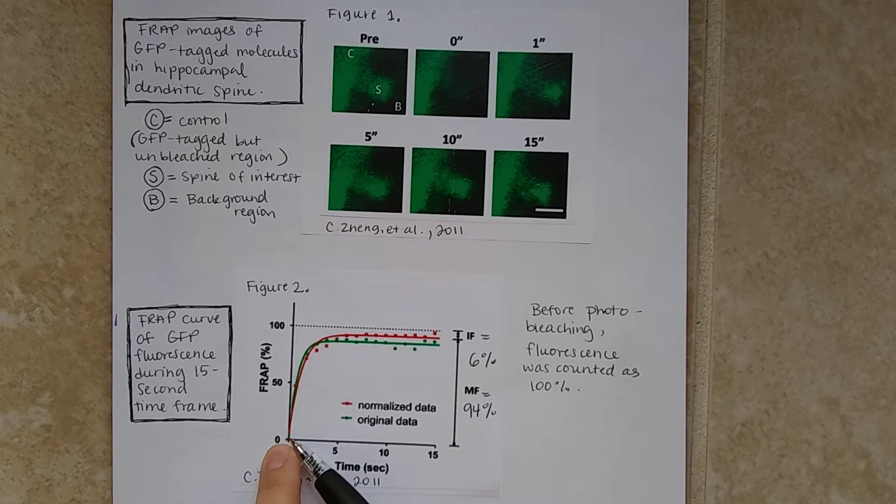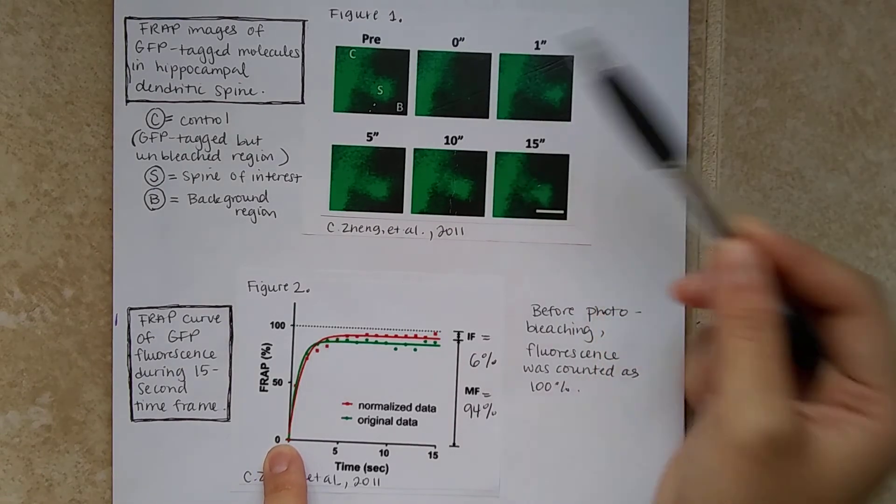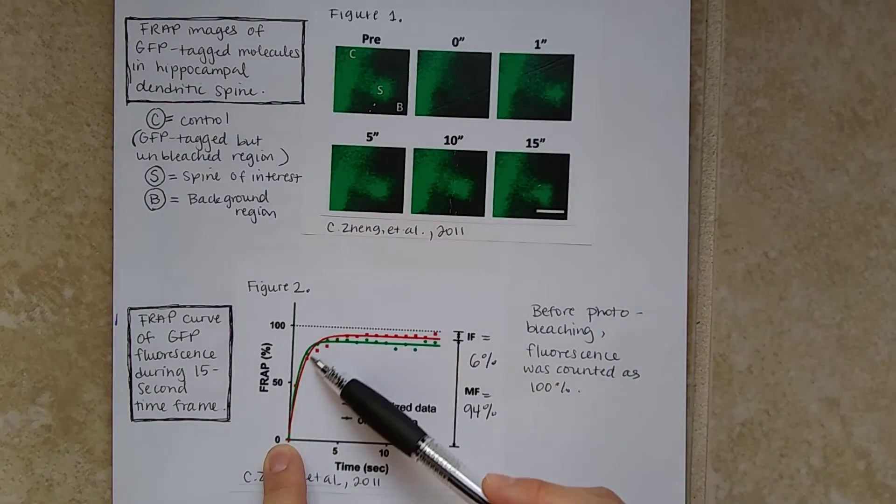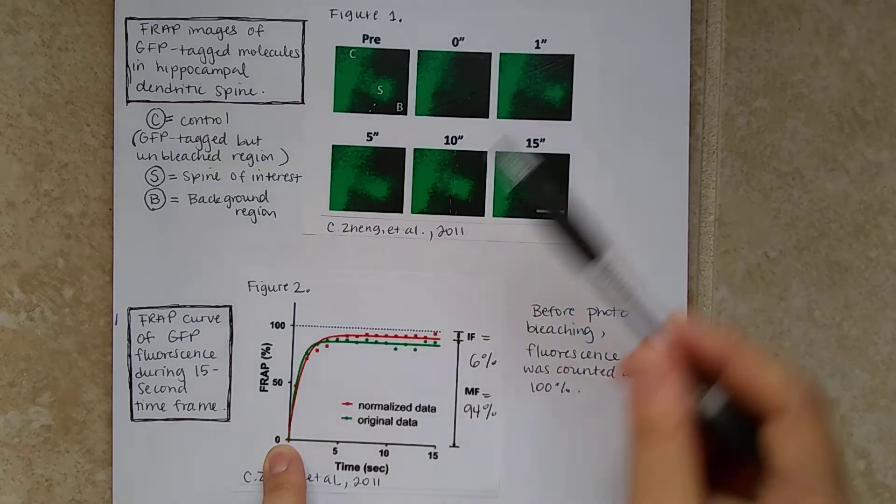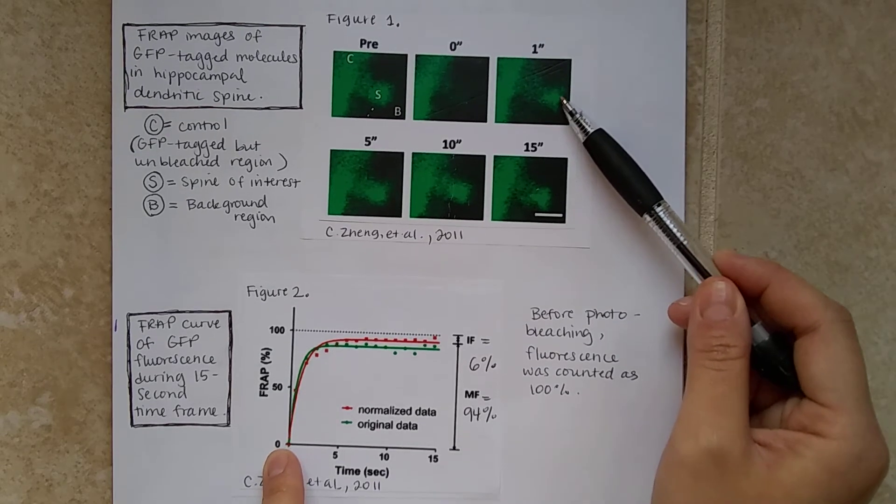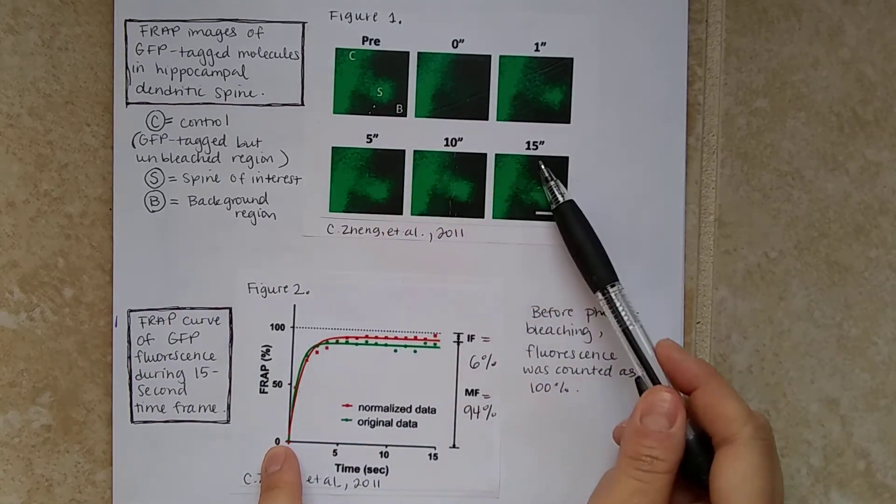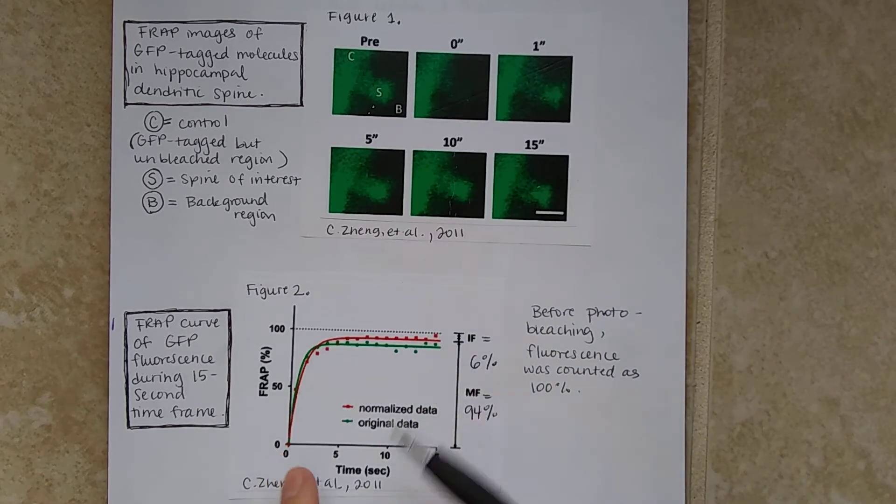Whenever right when it's photobleached, you can see that there is no fluorescence. As the time progresses, we can see that at time one second or so, it begins to express some recovery of the fluorescence. And at time 5, 10, and 15 seconds, it begins to plateau.